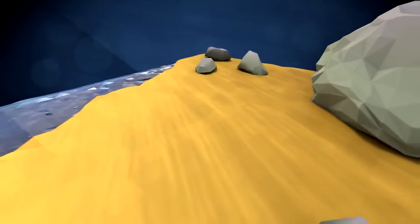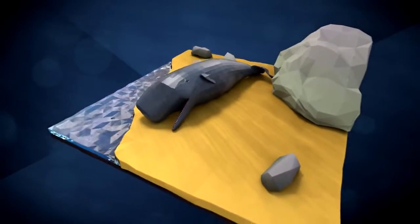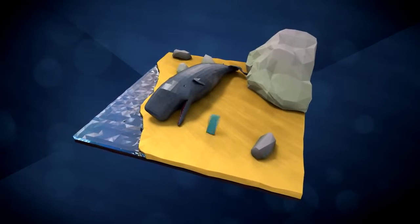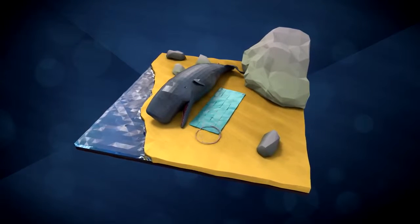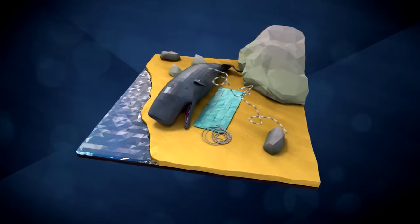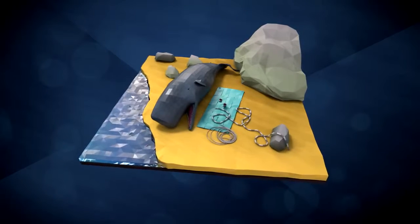When researchers examined the stomach of a beached sperm whale in 2012, they found 30 square meters of tarpaulin, a 4.5-meter-long hose, a 9-meter-long plastic rope, and two flowerpots.